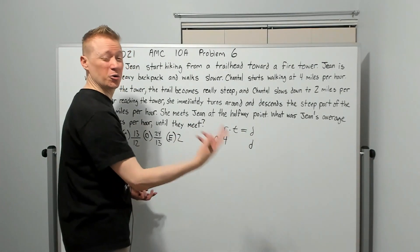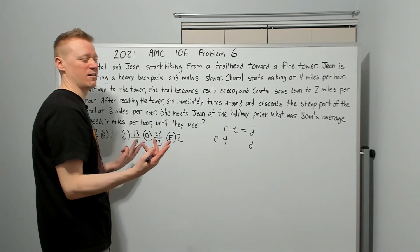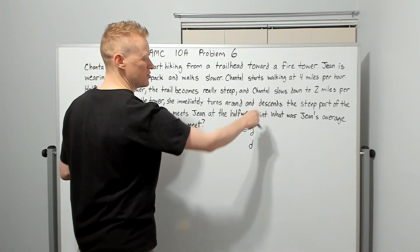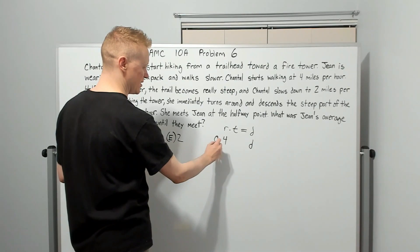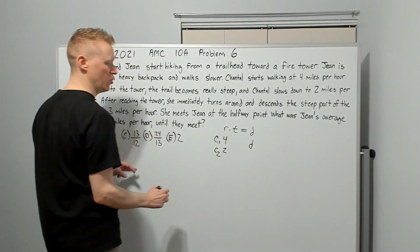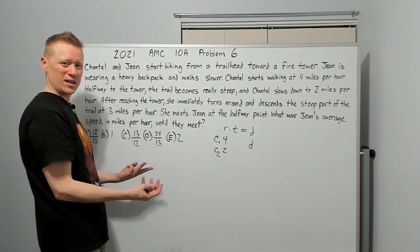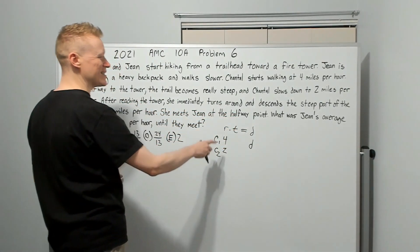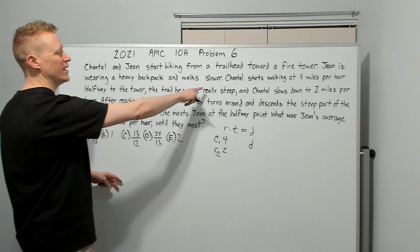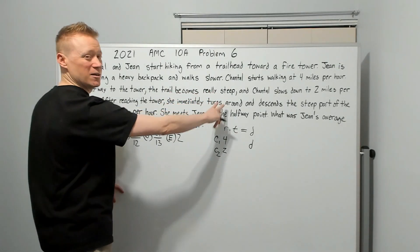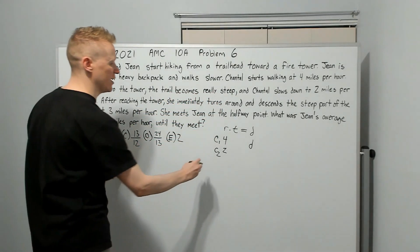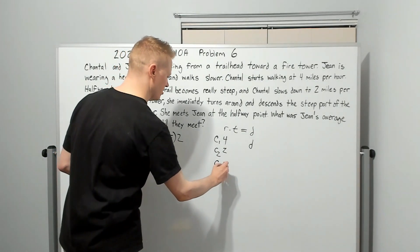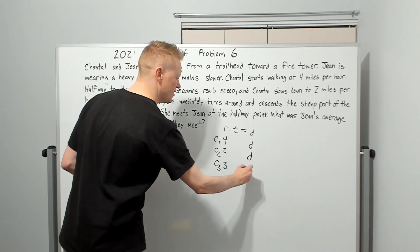Now, we could call the total distance to the tower D, but then this would have to be D over two, and now you've got a fraction. We don't want that. So halfway to the tower, the trail becomes really steep, and Chantel slows down to two miles per hour. So this would be C1. Here's C2. Now she's going two miles per hour. You add different notation as you're working through the problem as necessary. After reaching the tower, she immediately turns around and descends the steep part.